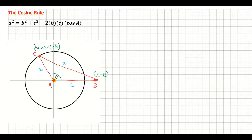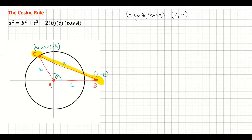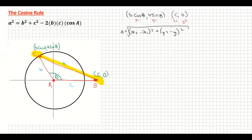To prove the cosine rule we're going to find the distance from point C to point B. We're finding the distance between two coordinates. Label them x1, y1 and x2, y2 — the order doesn't matter. We use the distance formula, which is on page 18 of your log tables.